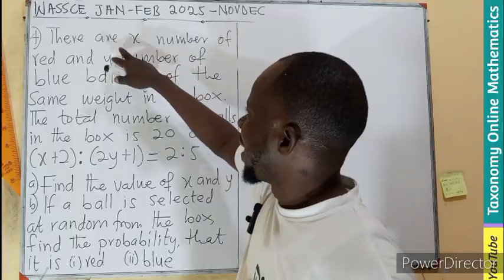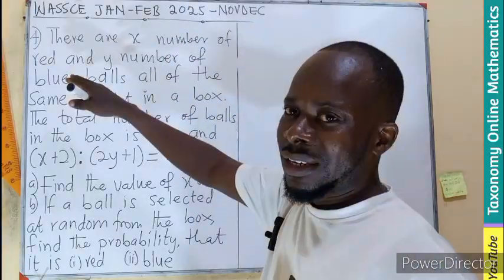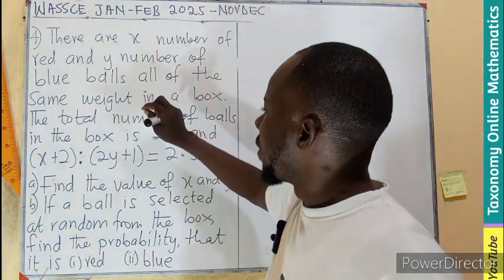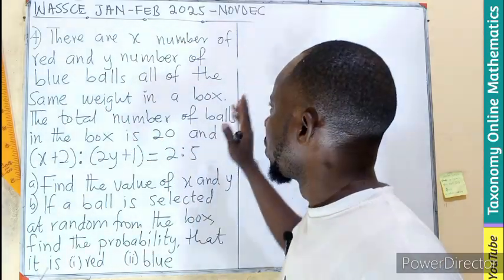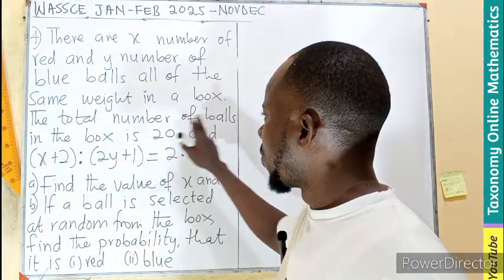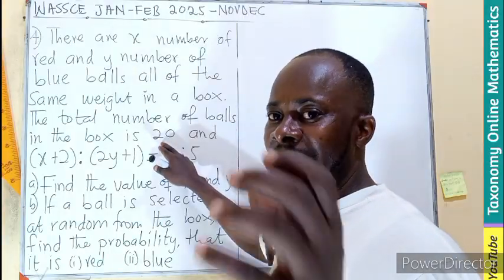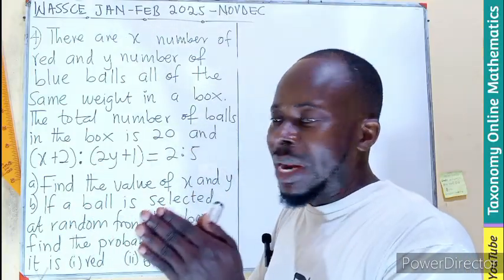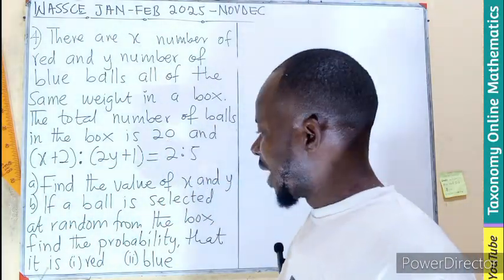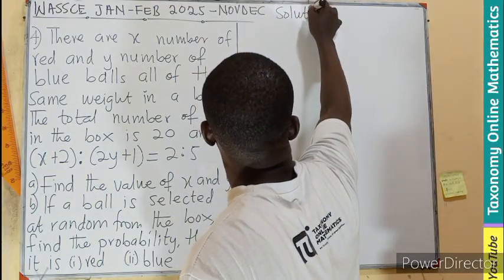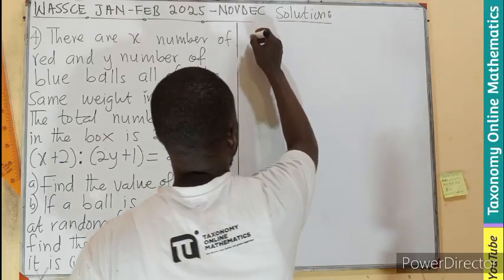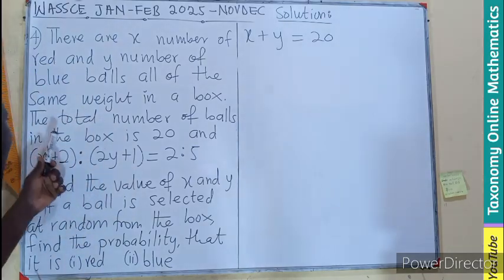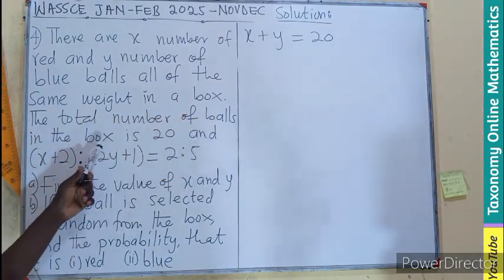Now let's take it again. They said there are X number of red, so the total number of red balls is X. Total number of blue balls is Y. Now if they are saying that the total number of balls is 20, meaning the number of red plus the number of blue, when we add the two together, we should be getting 20. We can say that X plus Y is equal to 20.